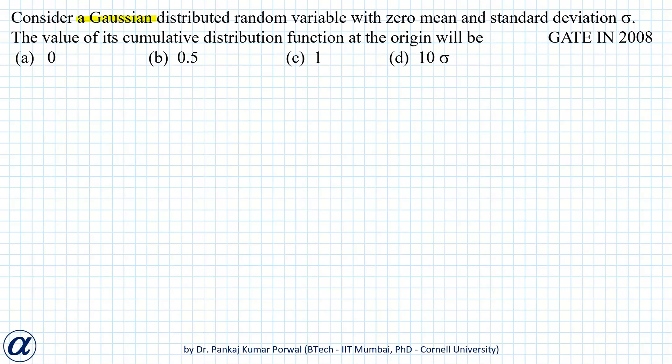In this question, we are given a Gaussian distributed random variable with zero mean and standard deviation σ. We want to find the value of its cumulative distribution function at the origin.